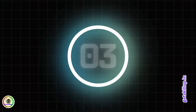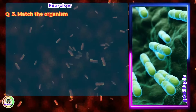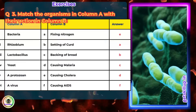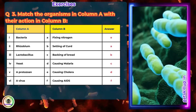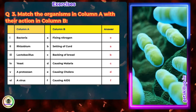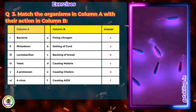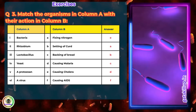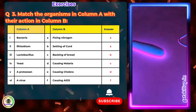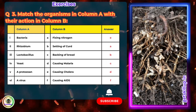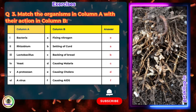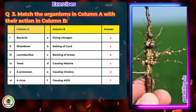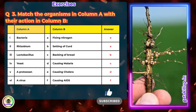Question 3. Match the organisms in column A with their action in column B. Bacteria — correct match: causing cholera. Some bacteria like Vibrio cholerae cause cholera, a waterborne disease. Rhizobium — correct match: fixing nitrogen. Rhizobium is a symbiotic bacterium that fixes nitrogen in root nodules of leguminous plants.